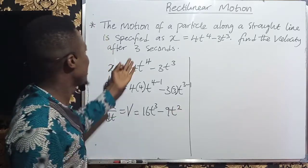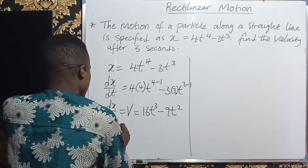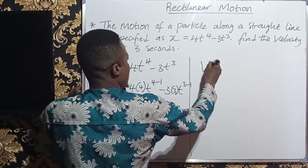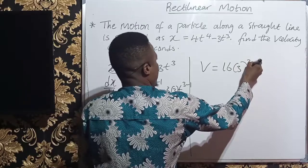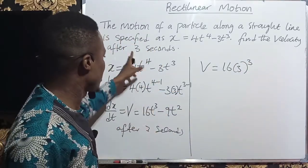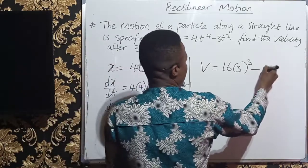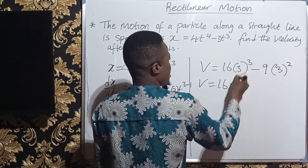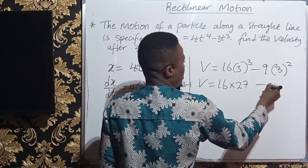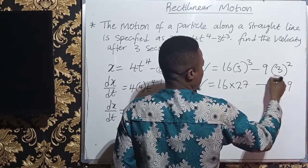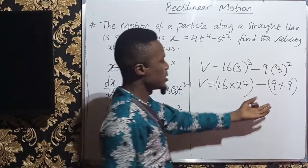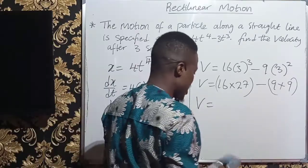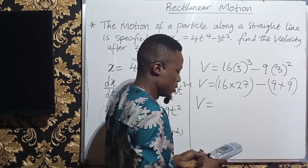This is just the velocity. But they say after 3 seconds, and t shows us the time. So after 3 seconds, we shall have that our v will now be 16 bracket 3 to the power of 3. I'm just updating the value of t as 3 in this particular function, minus 9 bracket 3 to the power of 2. So v will give me 16 times 3 power of 3 is 27, minus 9 times 3 power of 2 is 9.